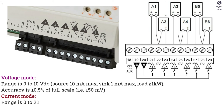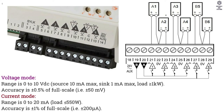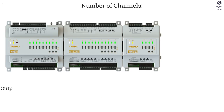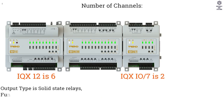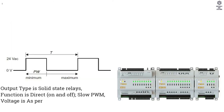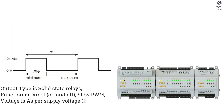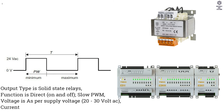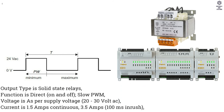Current Mode: range is 0–20 mA, load less than 550 Ω, accuracy ±1% of full scale. Digital Outputs: Number of channels: IQX12 is 6, IQXIO7 is 2, IQXIO20 is 6. Output type is solid state relays. Function is direct on/off or slow PWM. Voltage is as per supply voltage, 20–30V AC. Current is 1.5 A continuous, 3.5 A peak.